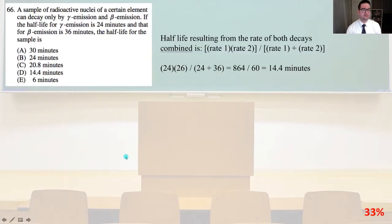Number 66. A sample of radioactive nuclei of a certain element can decay only by gamma emission and beta emission. If the half-life for gamma emission is 24 minutes and that for beta emission is 36 minutes, the half-life for the sample is.